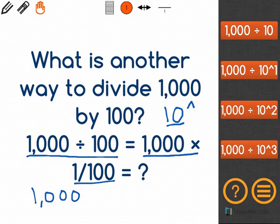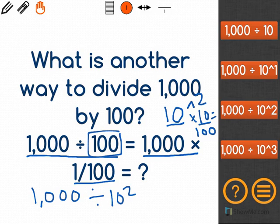So I know that 10 times 10 is equal to 100, which is the number that we started with. So I know that I see 10 once, twice. The answer should be 1,000 divided by 10 to the second.